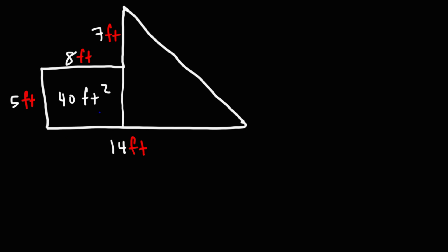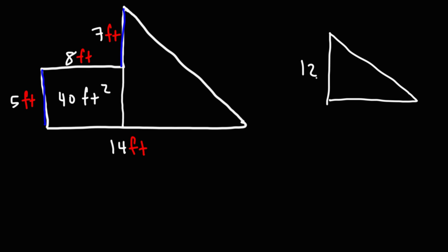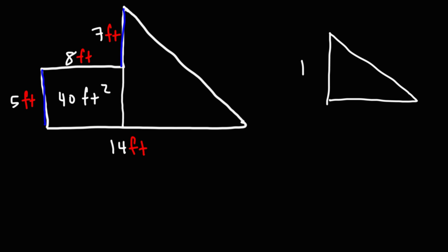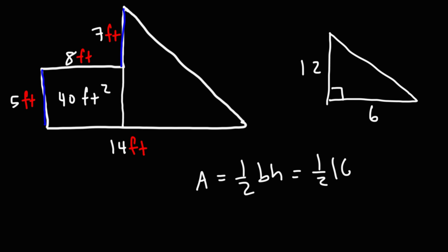Now let's focus on the triangle — we need to determine the height and the length of the base. For the height, it's the sum of this part and this part: 7 plus 5, which is 12. For the base, this part is 14 and this part is 8. Subtracting 14 by 8 gives us 6. Note this picture is not drawn to scale. So we have a height of 12 and a base of 6. The area is one half base times height — half of 6 is 3, and 3 times 12 is 36. So this part is 36 square feet.